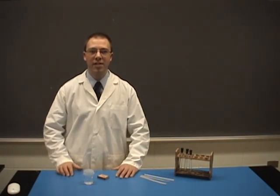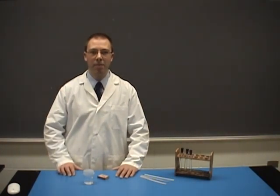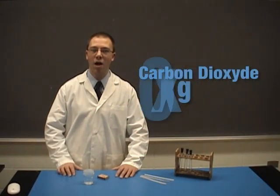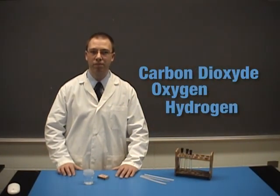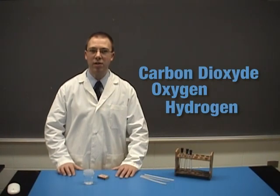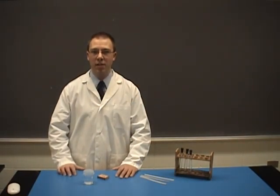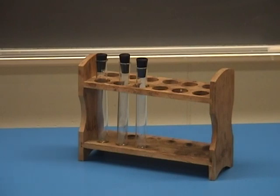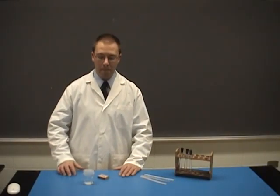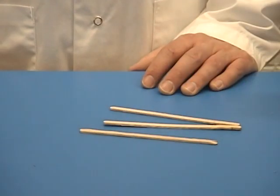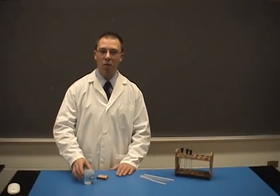The objective of this lab is to identify the properties of three gases commonly found in your environment: carbon dioxide, oxygen, and hydrogen. The materials that you'll need for this lab are three test tubes containing CO2, H2, and O2, matches, wooden splints, and lime water.